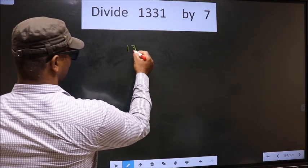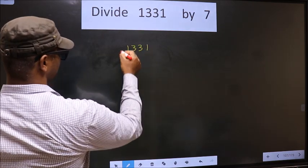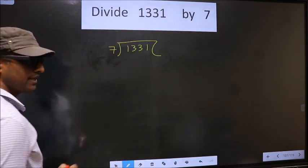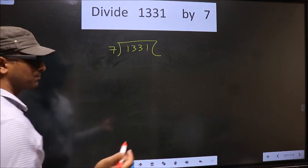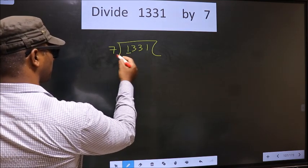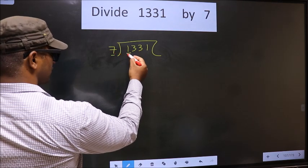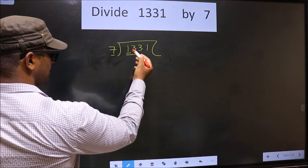That is 1331. 7 here. Now here we have 1. Here 7. 1 is smaller than 7. So we should take two numbers that is 13.